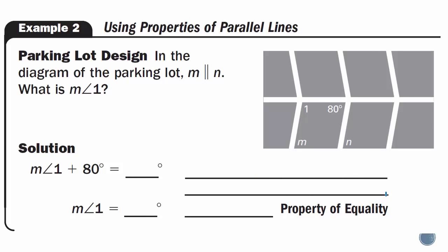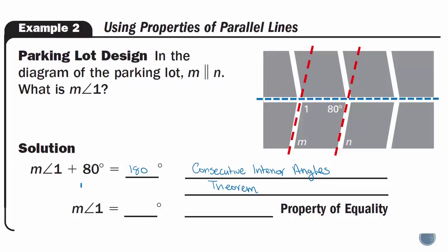Example 2, using properties of parallel lines — parking lot design. In the diagram of the parking lot, M is parallel to N. What is the measure of angle 1? It is easier to see if you extend the lines of M and N and draw the transversal. Angle 1 and the 80-degree angle are inside the parallel lines on the same side of the transversal, so they are consecutive interior angles, meaning the measure of angle 1 plus 80 degrees equals 180 degrees, using the consecutive interior angles theorem. Subtracting 80 from both sides gives the measure of angle 1 equals 100 degrees, using the subtraction property of equality.